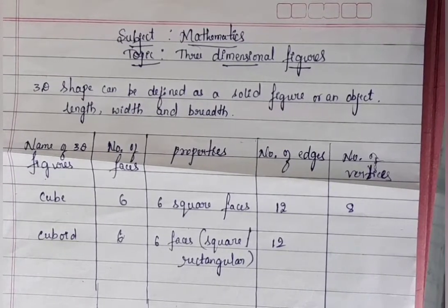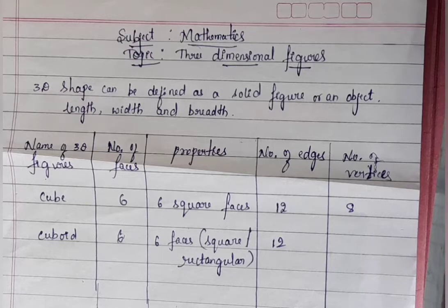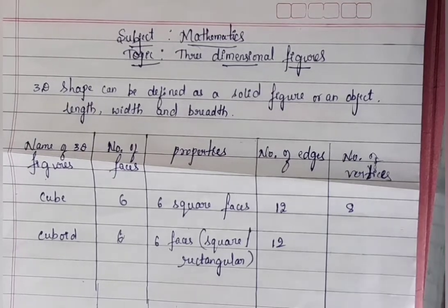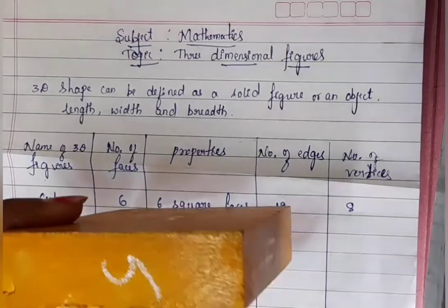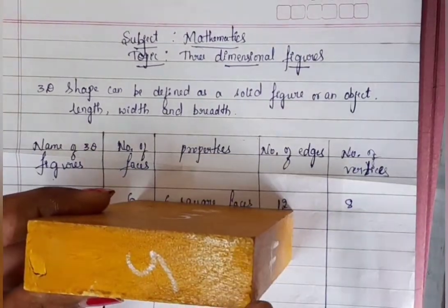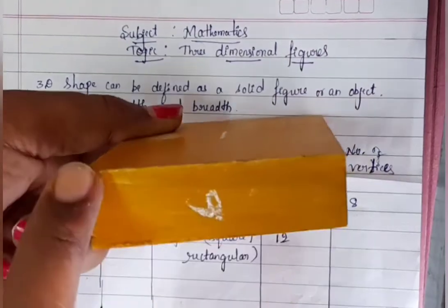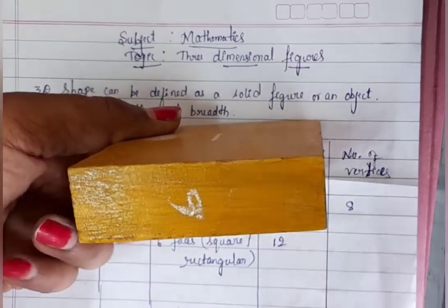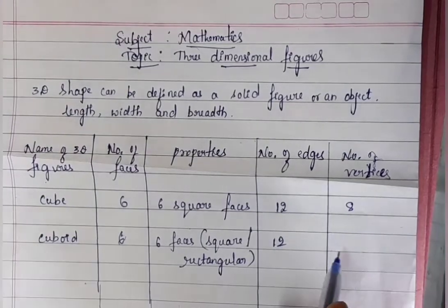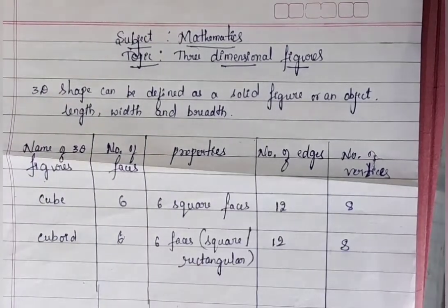Next, number of vertices. A vertex is a corner where edges meet; in the plural it is vertices. Count the vertices: one, two, three, four, five, six, seven, eight. The number of vertices in a cuboid is eight.